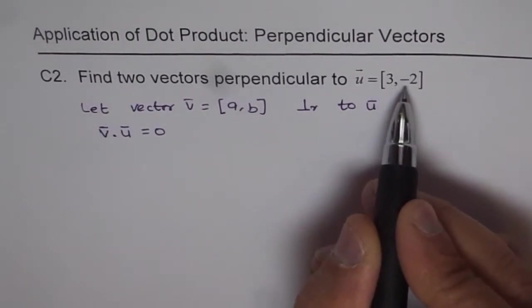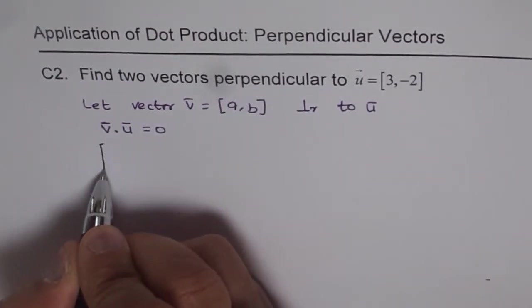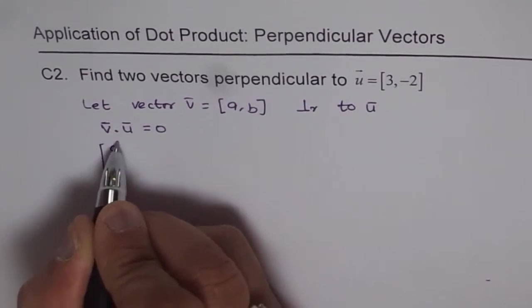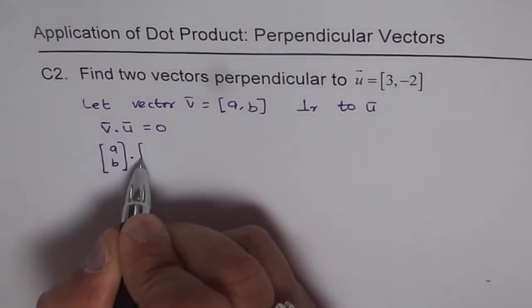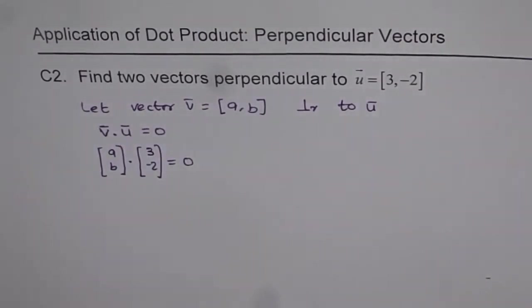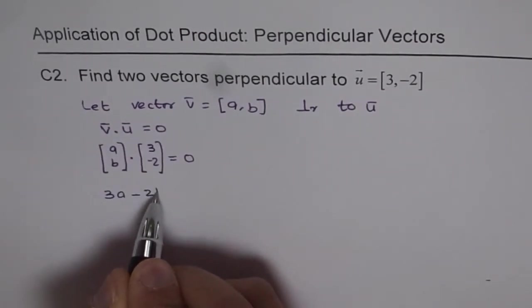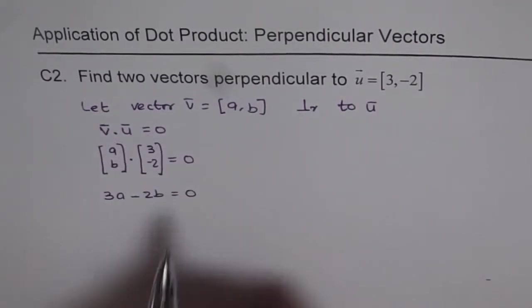Now u is given as [3, -2], and v is [a, b] for us. We have [a, b] dot [3, -2], which should equal 0. When you perform the dot product, you get 3a - 2b = 0.